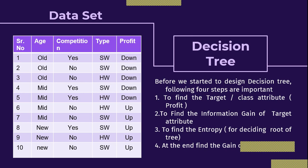So I hope all of you now have an idea about the decision tree. To summarize: you need some data set to design the decision tree. The first step is to find the target attribute, also called the class attribute.